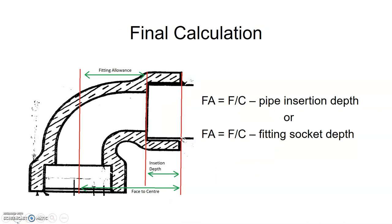Now that we have those two things, we can do our final calculation. In order to find FA, we take our face-to-center measurement and subtract our pipe insertion depth. So we subtract ID from our face-to-center, and we get our fitting allowance.